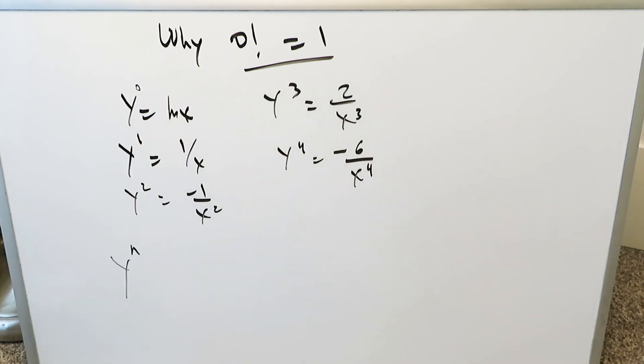The nth order derivative for this natural log function is always equal to the following. It's always minus 1 to the power of n minus 1 times n minus 1 factorial divided by x to the power of n. That's your rule.